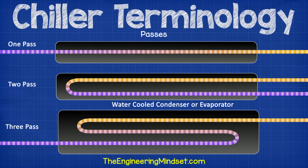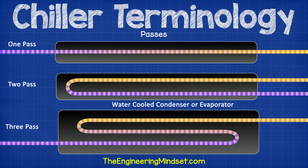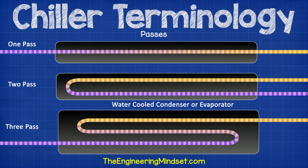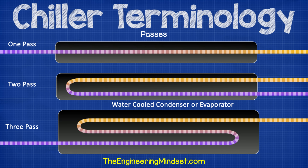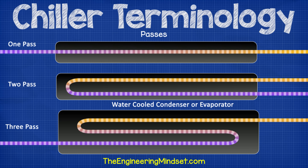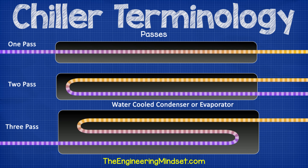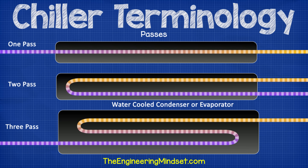One pass, two pass, and three pass. This refers to a water-cooled evaporator or condenser and the way that the water or refrigerant is piped through this component. In a one pass, the fluid will pass straight through, but for greater heat transfer, the tubes can be looped back on itself one or two times to increase the transfer time and the surface area, which will allow more heat to transfer over.